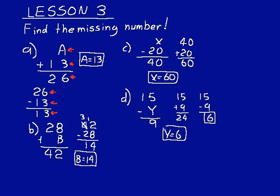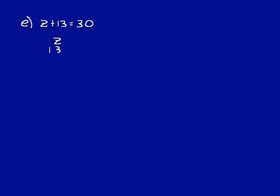Let's do a few more. Look at this problem: Z plus 13 equals 30. This one's written horizontally; if you want to rewrite it vertically, you can. We do subtraction: 30 minus 13. 10 minus 3 is 7, 2 minus 1 is 1, so Z is equal to 17.